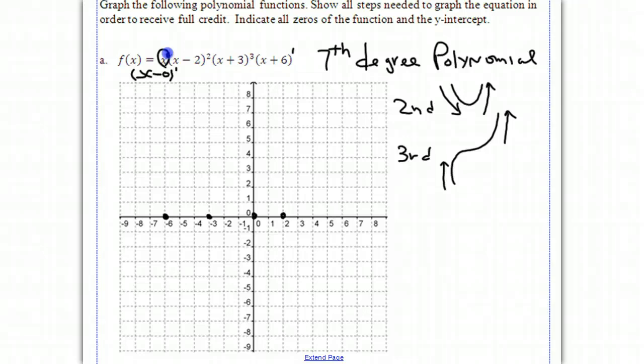We know that the function, since it's an odd degree, starts increasing from the left. And at (x + 6), it's only a single root. So we know that when you have a single root, it goes through it. Now we don't really know how high up it goes because we don't know what the leading coefficient is. So we'll just estimate that, because we're just sketching the graph.